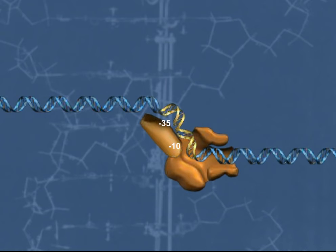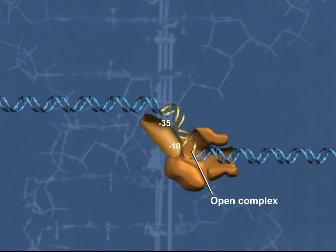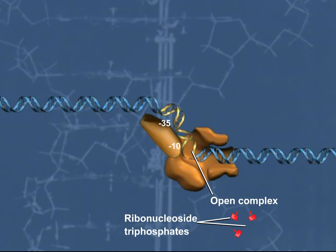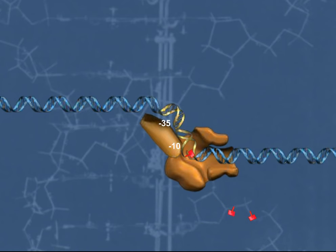By breaking hydrogen bonds between bases in the double helix, the closed complex is converted into the open complex. The formation of the RNA transcript from nucleotide triphosphates then takes place as RNA polymerase forms the new transcript, starting at the 5' end of the transcript. New nucleotides are added onto the free 3' end. The initiation of transcription is completed when sigma factor is released.